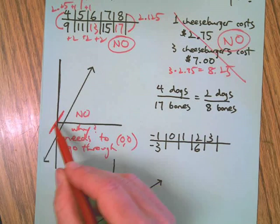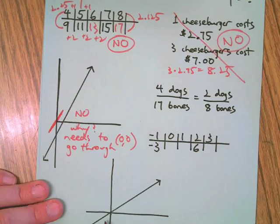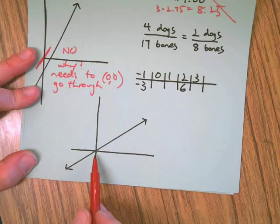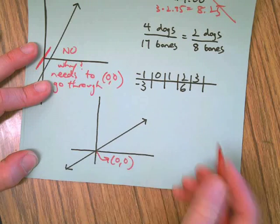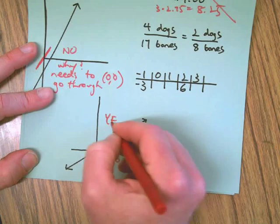Let's skip down to this other graph because that's easy to see. Since that does go through the origin and it's a straight line, that's a yes.